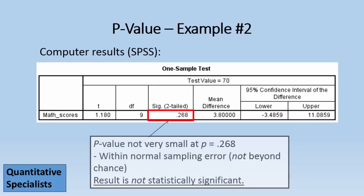Taking a look at another example, here we see a p-value reported as SIG once again in SPSS as .268. Now that's not really that small. So that's within normal sampling error, we would say, or it's not beyond chance. So the result is not statistically significant.